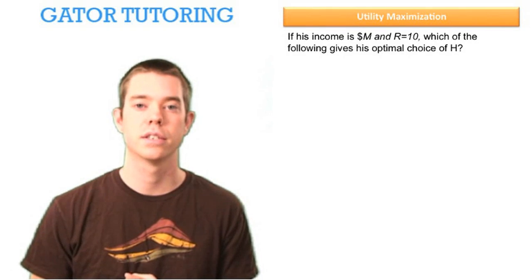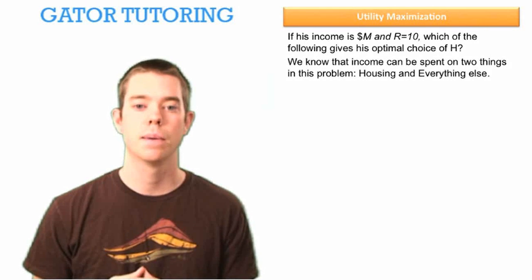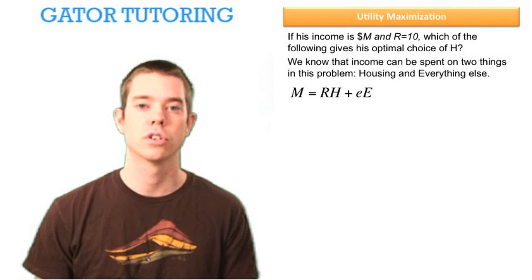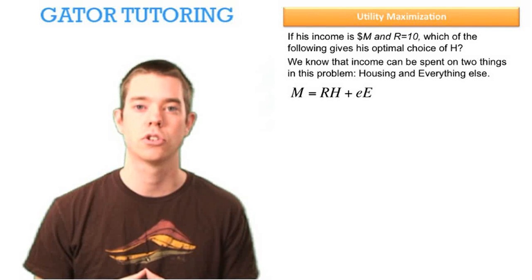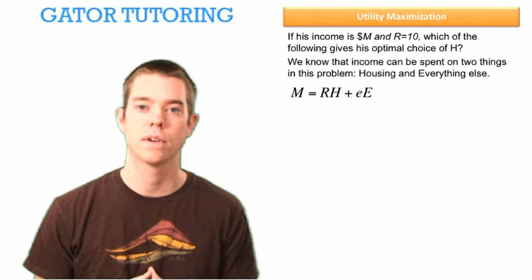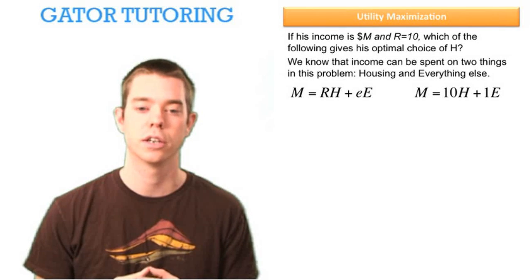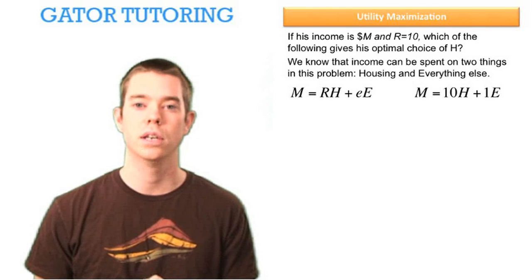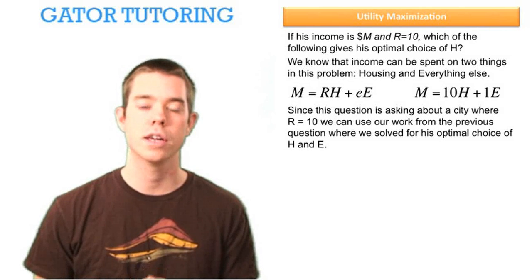The next question says, if his income is denoted M and R equals 10, which of the following gives his optimal choice of H? We know that income can be spent on two things: housing and everything else. So we can write M equals R times H plus little e times E. We already know R is 10 and little e is 1. Since this question is about a city where R equals 10, we can use the work from the previous question.